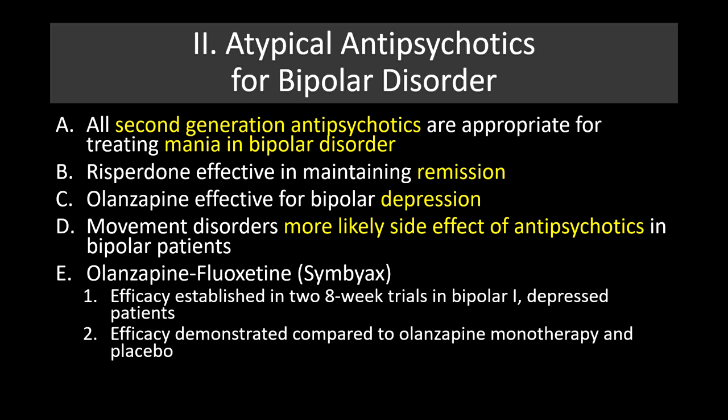All second-generation antipsychotics are approved for treating mania and bipolar disorder. Risperidone is effective in maintaining remission from symptoms. Olanzapine is particularly effective for bipolar depression. Movement disorders are more likely to be a side effect in bipolar patients taking antipsychotics and should be monitored closely. There is also a new drug called Symbyax — a combination of olanzapine and fluoxetine (an antidepressant) — whose efficacy has been established in two eight-week trials in bipolar one depressed patients, showing superiority over olanzapine monotherapy and placebo.